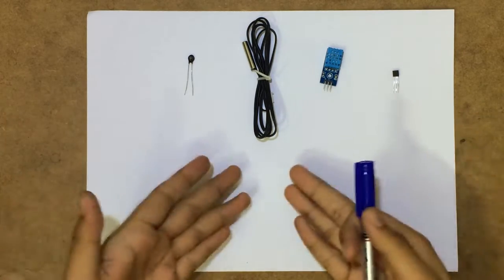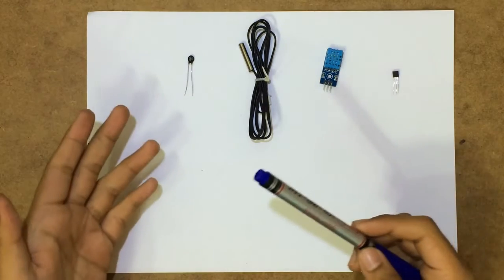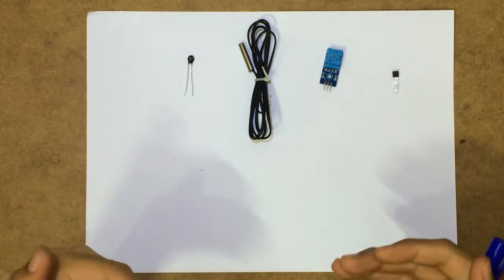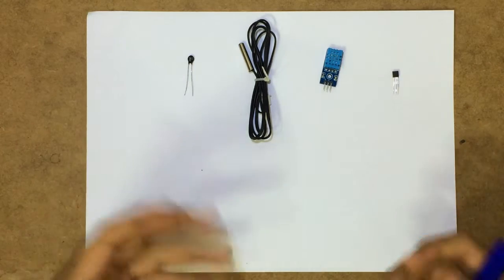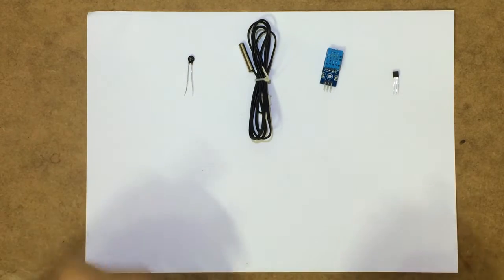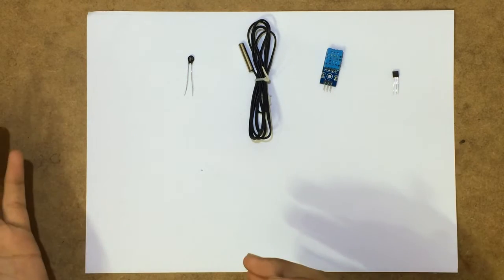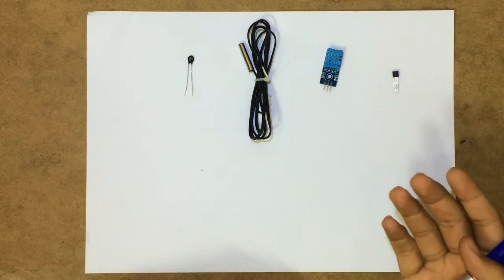Here are a few of the temperature sensors, very viable ones. So this is a thermistor, it is based on the resistance. Now the resistance of this thing varies with the temperature. There are two types of thermistors, NTCs and PTCs for negative temperature coefficients or positive temperature coefficients.